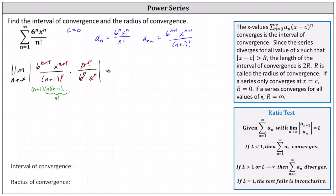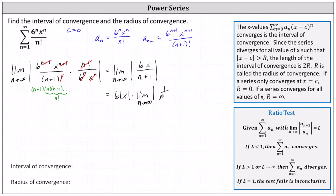We can write the given limit as the limit as n approaches infinity of the absolute value of 6 times x divided by the quantity n plus 1. Notice 6 and x are not affected by n, so we can write this as 6 times the absolute value of x times the limit as n approaches infinity of 1 divided by the quantity n plus 1. As n approaches infinity, 1 divided by n plus 1 approaches 0, giving us 6 times the absolute value of x times 0, which equals 0.